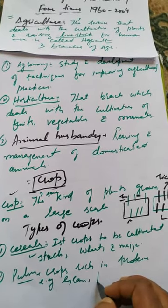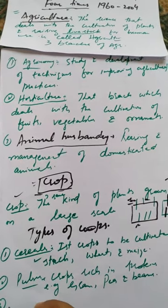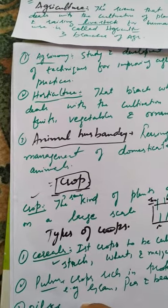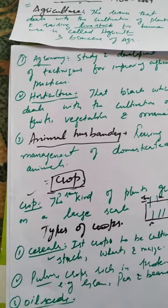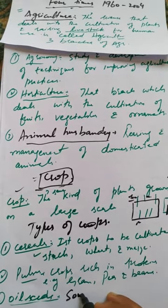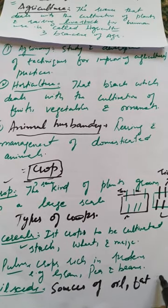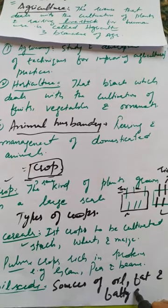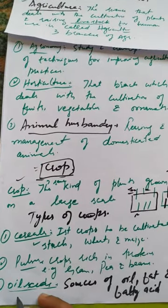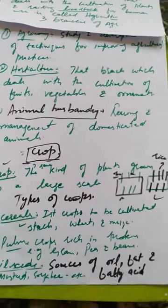The third type is oil seeds. Oil seeds are the sources of oil, fat and fatty acids. These are the crops which are a good source of oil, fat and fatty acids. For example, mustard, soya bean, etc. — these are the oil seeds.